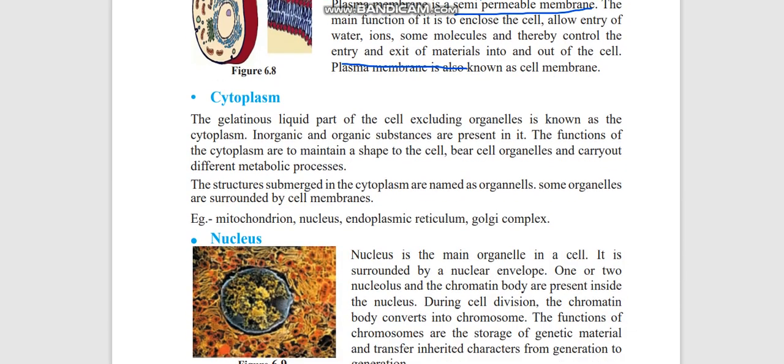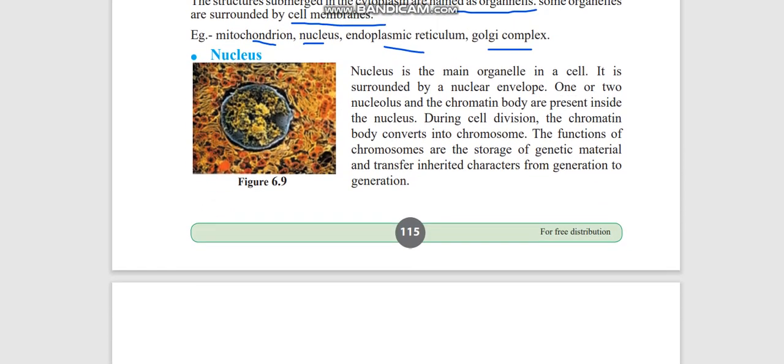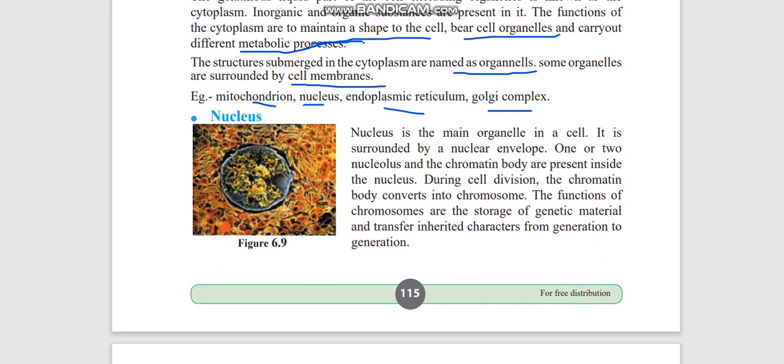The other one is cytoplasm. This is a gelatinous liquid part in which the organelles are embedded. Excluding the organelles we call it cytoplasm. It helps to maintain the shape of the cell, bear the cell organelles, and carry out metabolic processes. The structures which are in the cytoplasm we call organelles. Some organelles have membranes: mitochondria, nucleus, endoplasmic reticulum, Golgi complex.